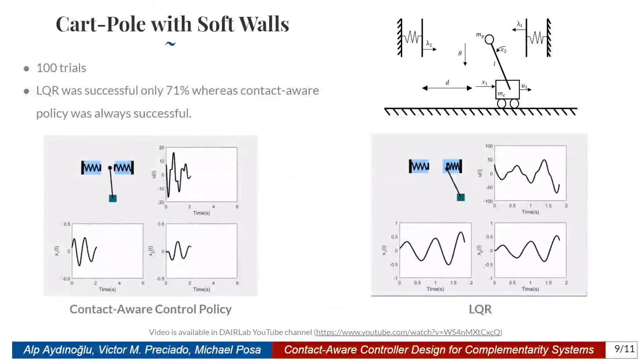As the first example, we consider a cartpole model with soft walls. Here, x1 is modeling the position of the cart, x2 is modeling the position of the pole, and lambda 1 and lambda 2 are used to model the effect of the soft walls on the pole. Also, u1 is modeling the input, the force that's applied to the cart.